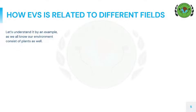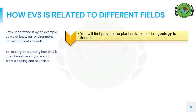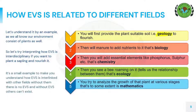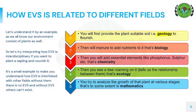Let's understand the example. Before planting a seed, you need suitable soil, which we study in geology. After that, you need to add manure and nutrients, which is basically part of biology. Next, you need to add essential elements like phosphorus and sulfur, which falls under chemistry. You also need to analyze the growth of the plant at various stages, and that's where mathematics comes in.